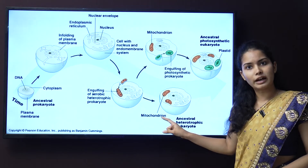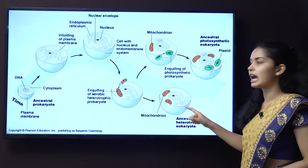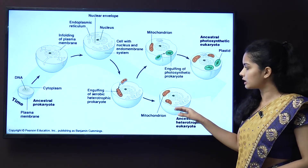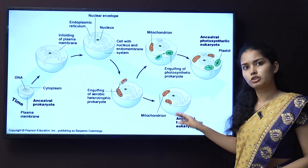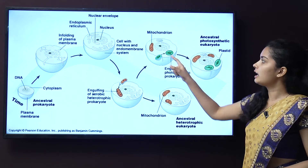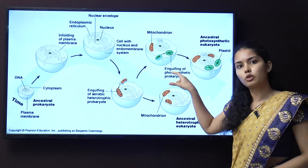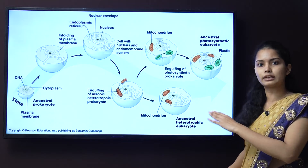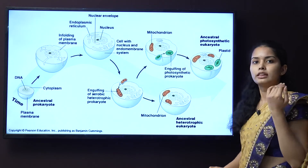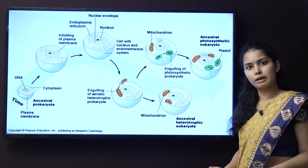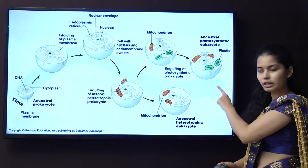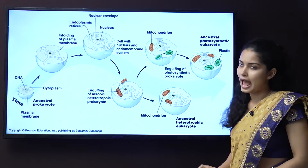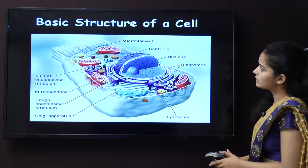The mitochondria that was engulfed started giving energy to the cell, and the cell in return gave shelter to the mitochondria. The same cell also engulfed the chloroplast, which has chlorophyll and can perform photosynthesis, giving the cell food in return for shelter. This became the eukaryotic plant cell, while the one which engulfed only mitochondria became the eukaryotic animal cell.